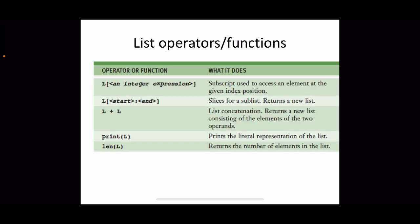We can use indexing to access individual items of a list: the list name followed by an integer expression in square brackets representing the position of an element. We can also take a subpart of a list using the slicing operator: list name with a starting index, colon, and ending index inside square brackets. This returns a new list containing that extracted portion.